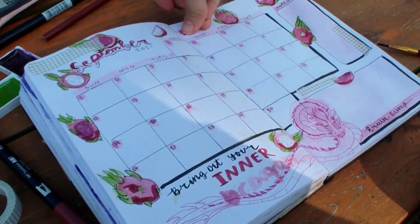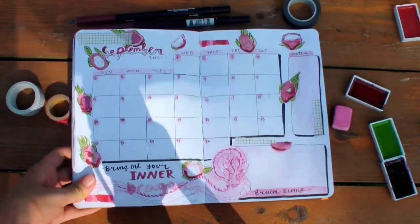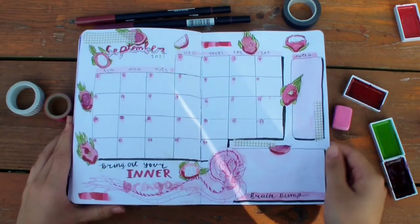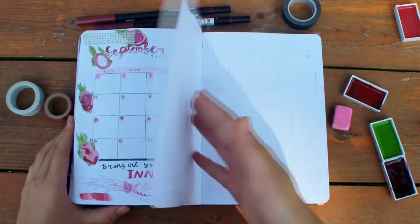Lastly, I'm adding some washi tape. The grid washi tape is my favorite because I use it for almost every theme I have. Moving on to the next page.